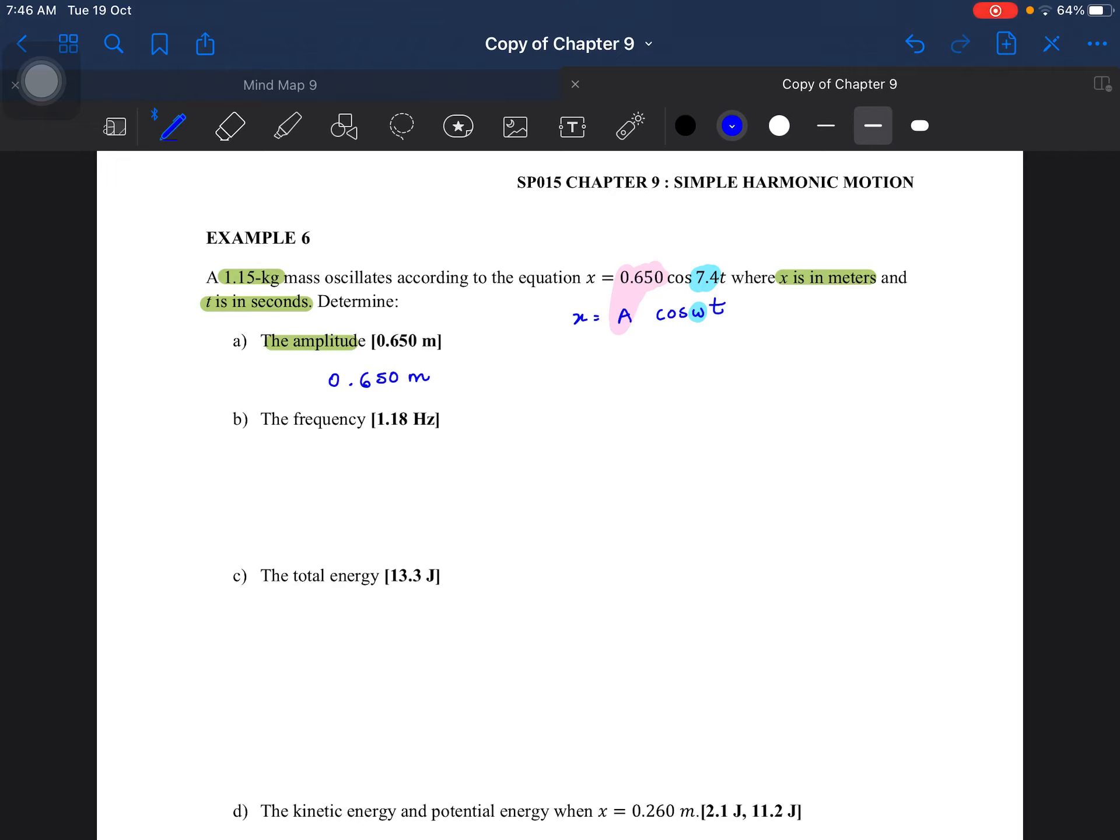And then, the frequency is, we have omega. So omega is 2 pi f. Omega is 7.4. So f equals 7.4 divided by 2 pi. So you will get 1.18 hertz.